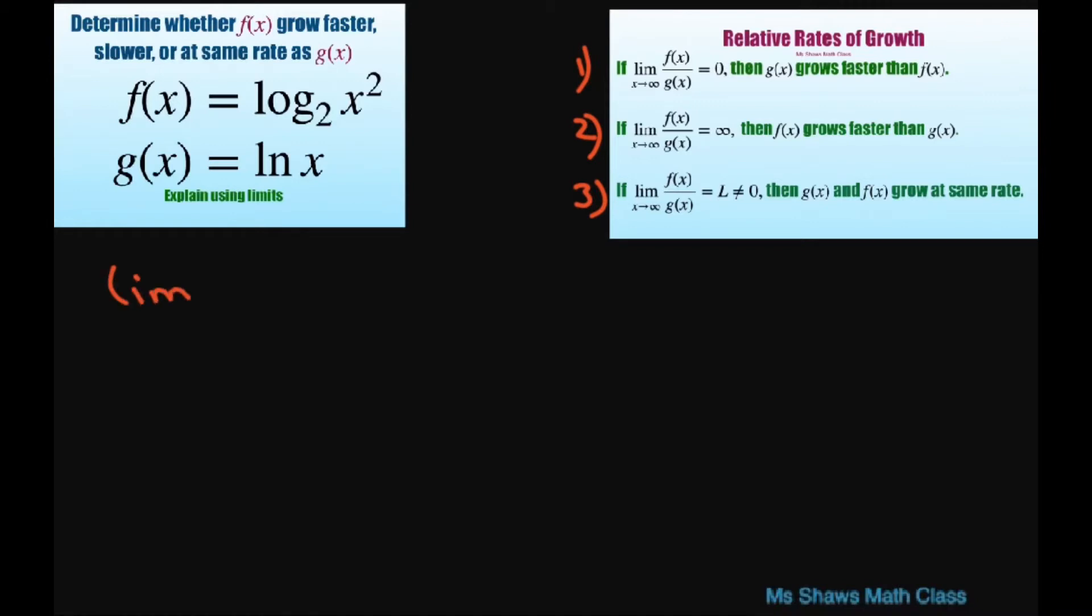Basically, we're looking at the limit as x approaches infinity of f of x divided by g of x. We're going to see if it equals zero, infinity, or a constant value that doesn't equal zero.